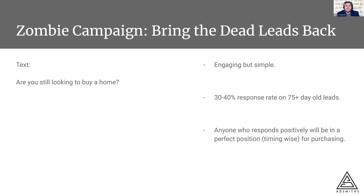It's going to elicit a yes or no response. We're hitting them at 75 to 90 days — three months into the timeline. They've been thinking about buying a home and now they're figuring out what the next step actually is. They'll say they already purchased, which gives you tons of valuable information, or they'll say they are looking to purchase now — great, get engaged with that person.